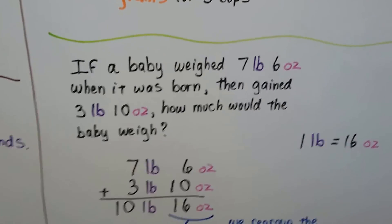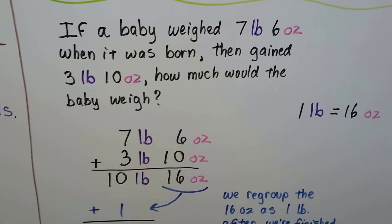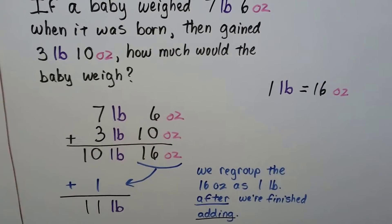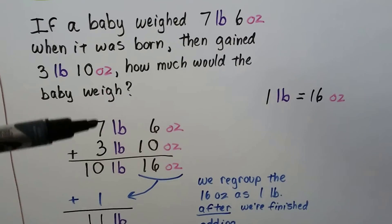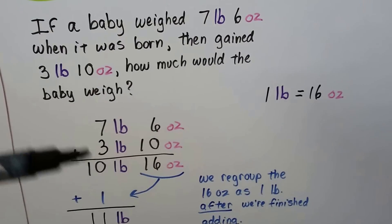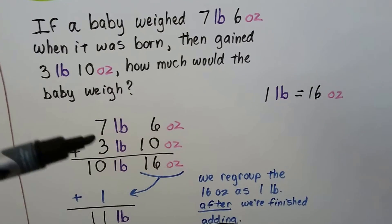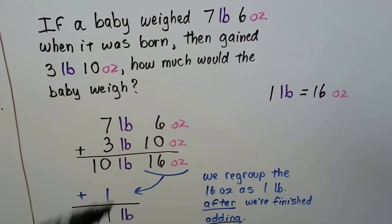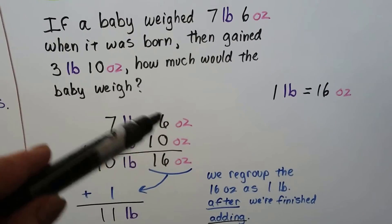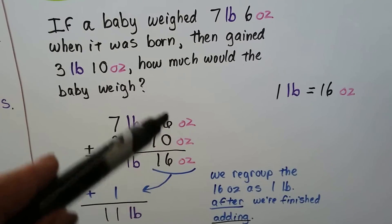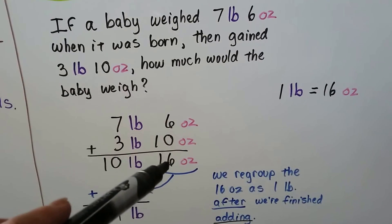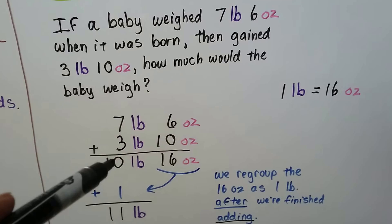If a baby weighed 7 pounds 6 ounces when it was born, then gained 3 pounds 10 ounces, how much would the baby weigh? So what we do in this case is we stack them vertically on top of each other. 7 pounds 6 ounces and 3 pounds 10 ounces. We put the ounces together and we put the pounds together. And we add the ounces, we get 16 ounces, then we add the pounds, we get 10 pounds.